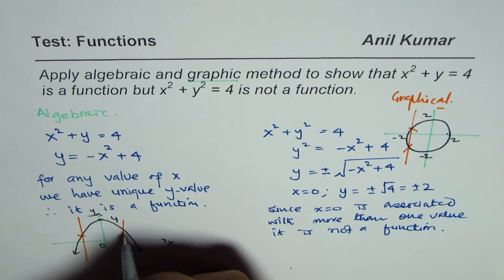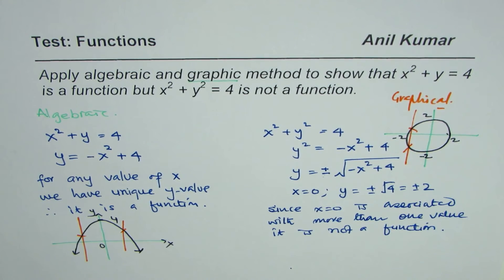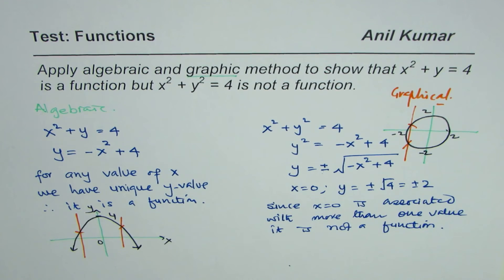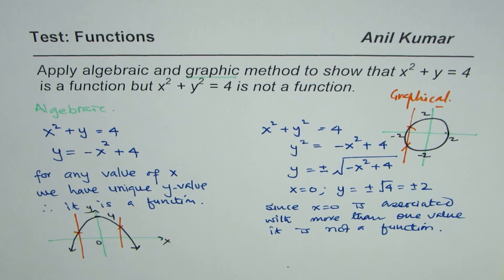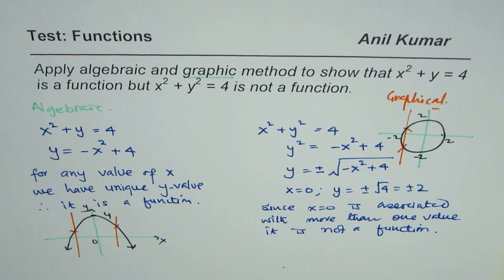So that is the graphical explanation. And here if I draw a vertical line it just passes at one point. So that is how you can show that these two expressions - the first one is a function and the other one is not a function - using these two methods. I hope that helps, thank you and all the best.